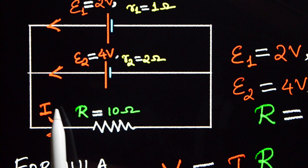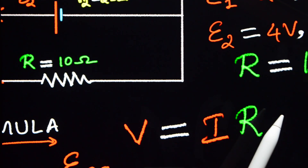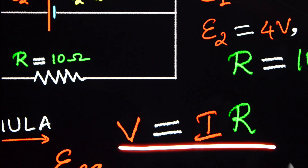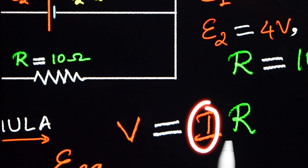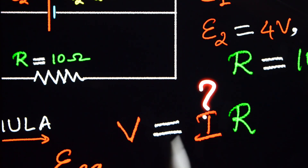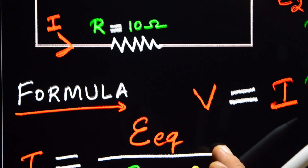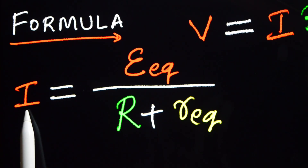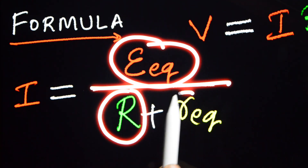We need to find the current. If we find the current, we can use Ohm's law: V is equal to I into R. V is the potential difference, I is the current, and the resistance is given as 10 ohm. We have a formula: I is equal to E divided by capital R plus small r.